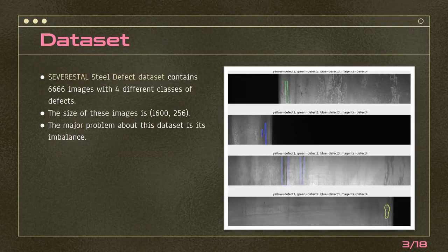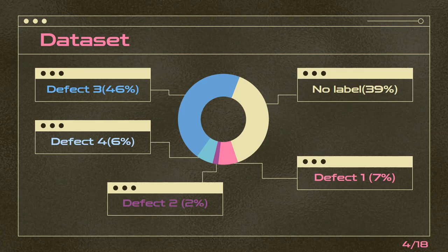Before going further and talking about our models, I want to talk about our dataset. We use the Severstal steel defect dataset. It contains images from steel sheet surfaces with four types of defects, as you can see in this picture. It has a big issue: imbalanced classes. As you can see in this slide, most of the data is from defect number three, followed by a lot of images with no labels, and only 15 percent of our dataset is from defects number one, two, or four.